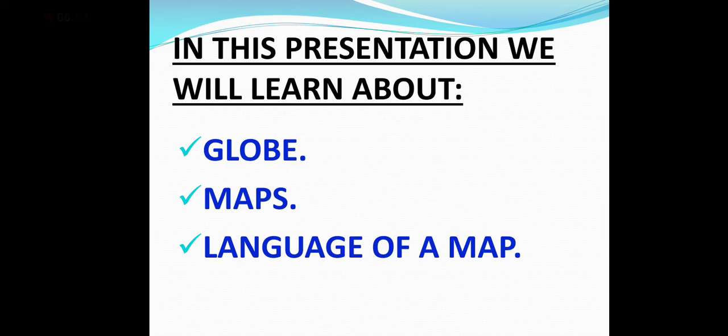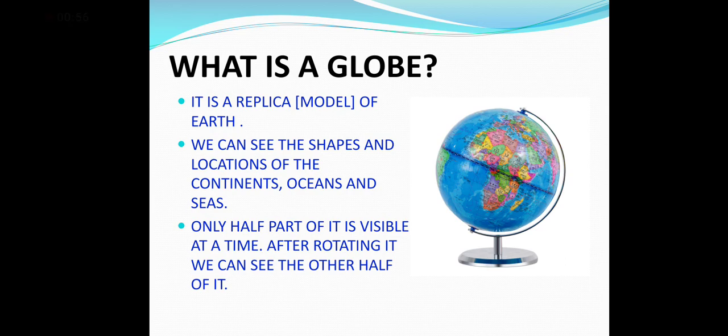In ancient times, people believed that the earth was flat and they would fall off from its surface if they travelled to its edge. In around 500 BCE, a Greek scholar Pythagoras proposed that the earth is round.